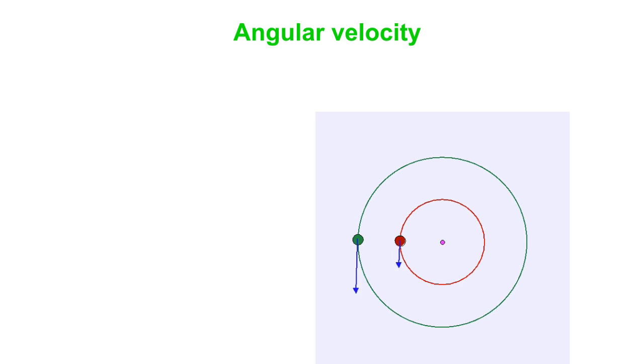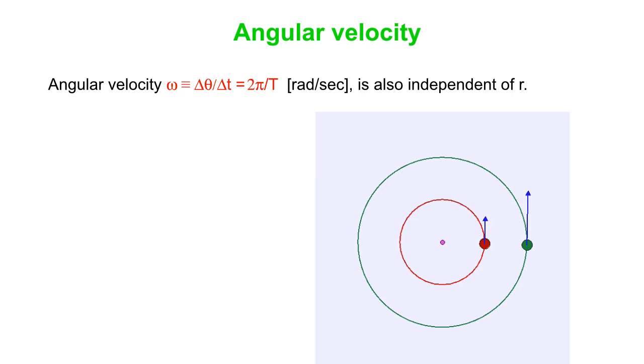So now we'll talk about angular velocity as opposed to just regular linear velocity. So angular velocity is the time rate at which an object sweeps out a particular angle. So those two objects we saw there going around the circle have the same angular velocity. They go through the same angle in the same time period.